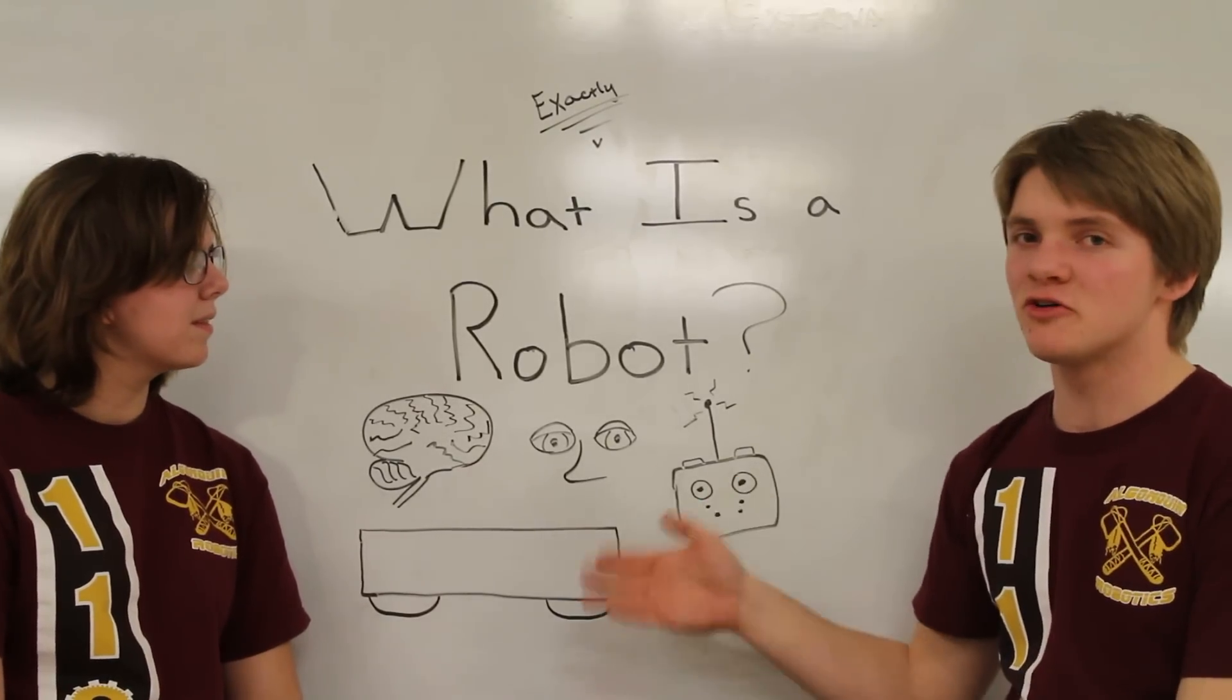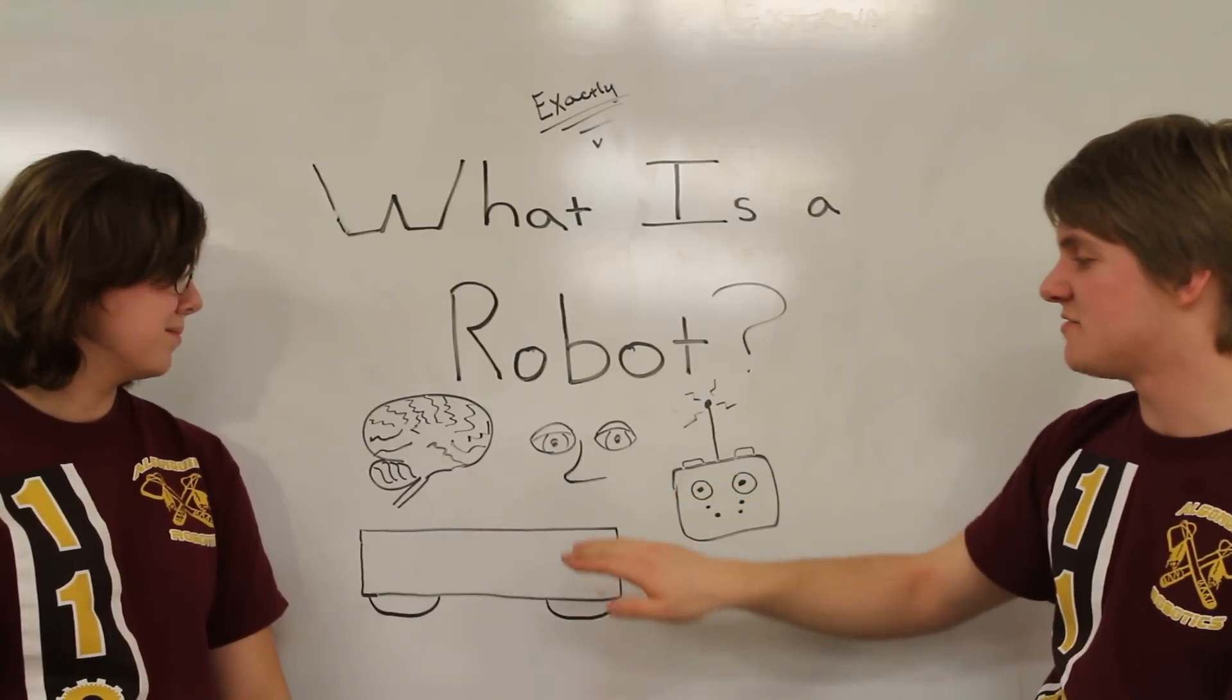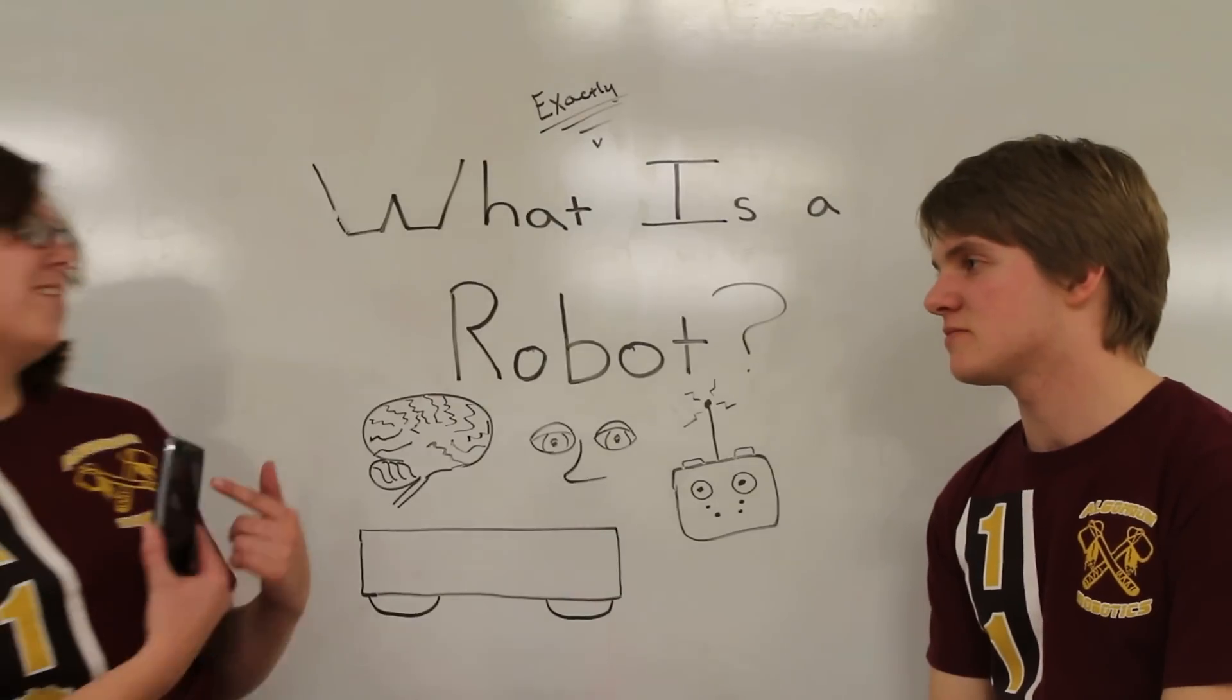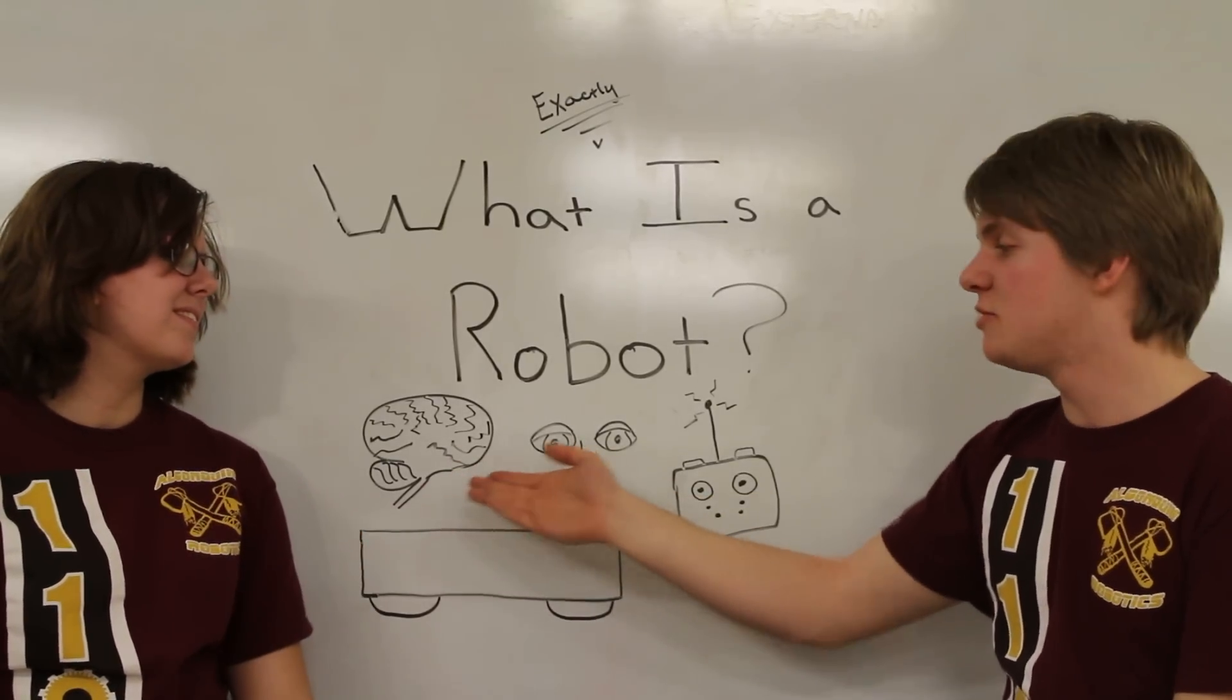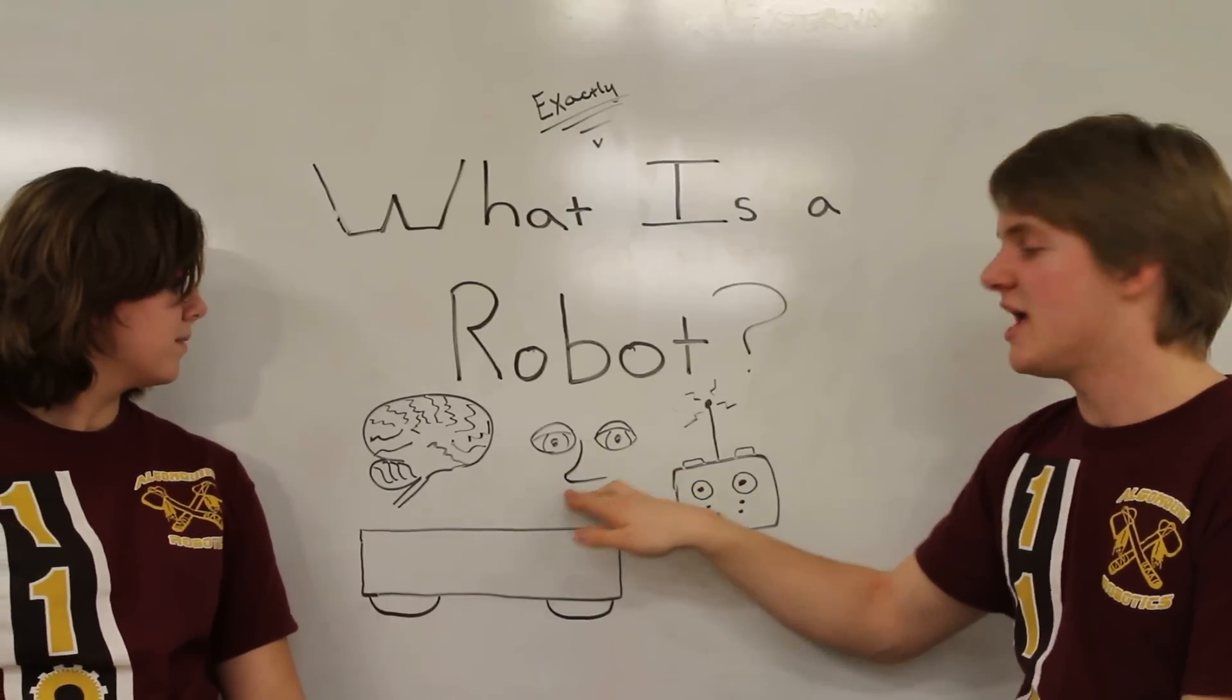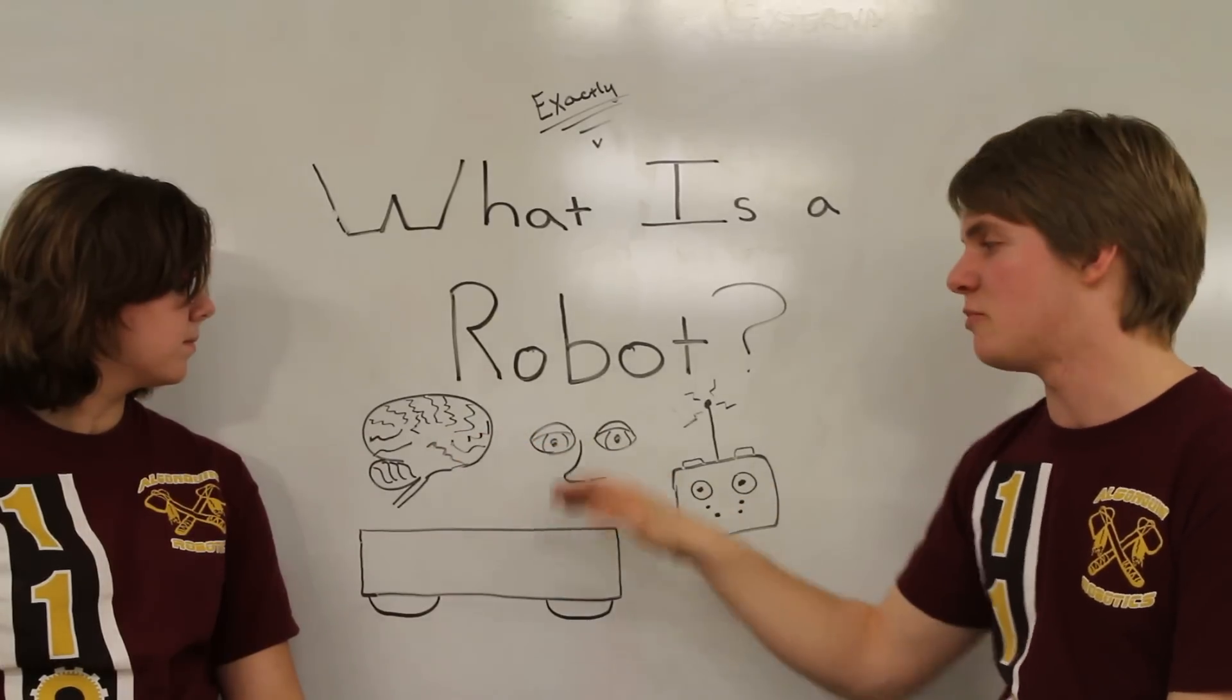And what the internal components of a robot are is a robot needs to have a brain, it needs to have sensors, and it needs to have input. Okay. My phone does not have a brain, John. You're right. Your phone does not actually have a brain inside it. The brain is really a computer. A computer inside the robot tells it what to do with the input. It uses sensors and the controller to process information and output information.